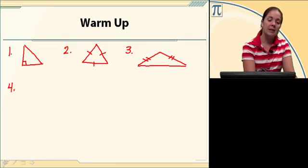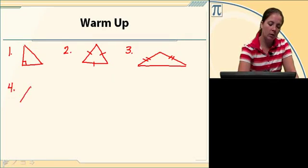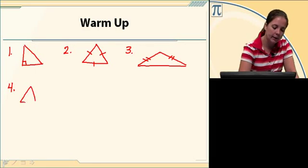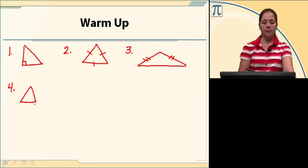The next one we're going to do is an acute triangle. Acute means that all three angles are less than 90 degrees. There's an example of an acute triangle.